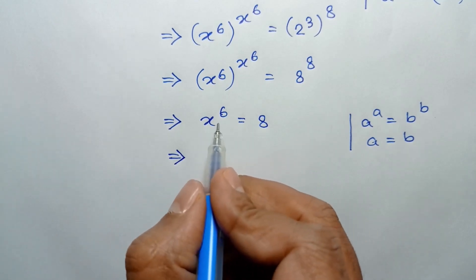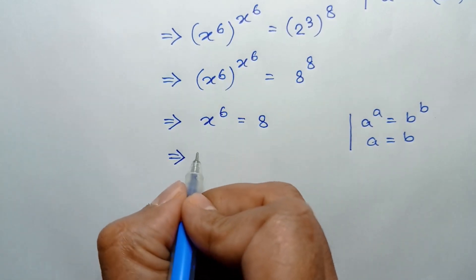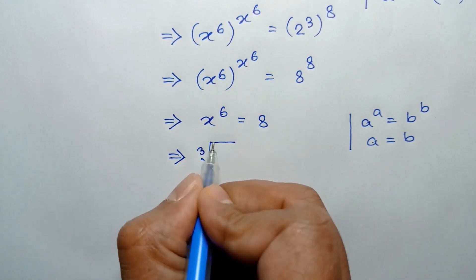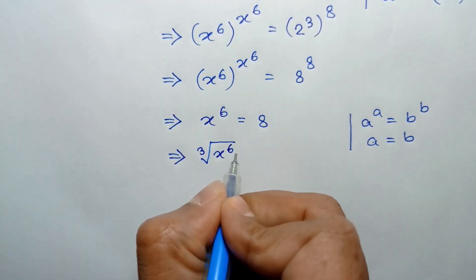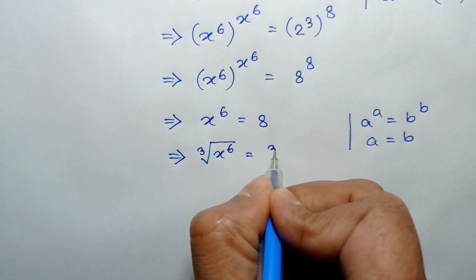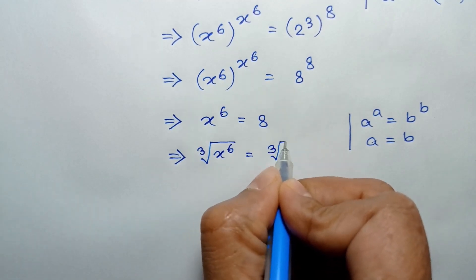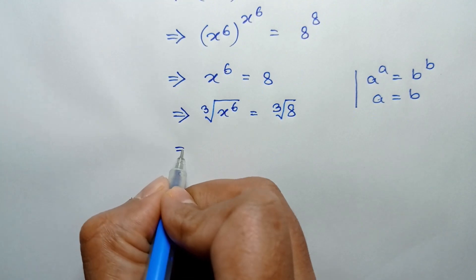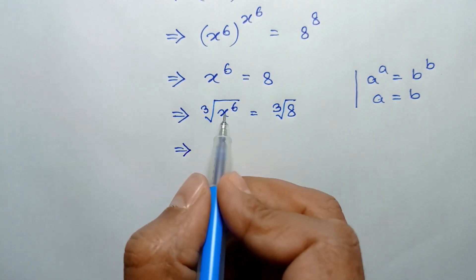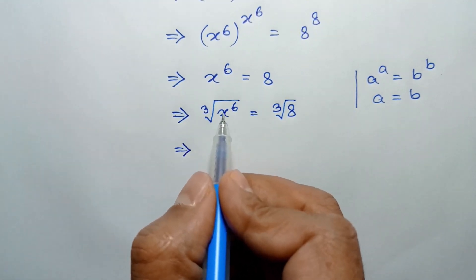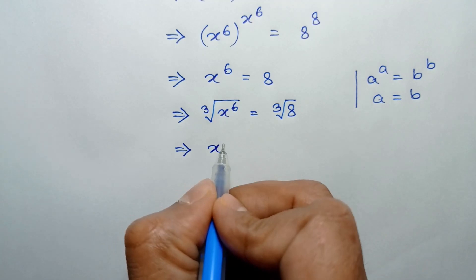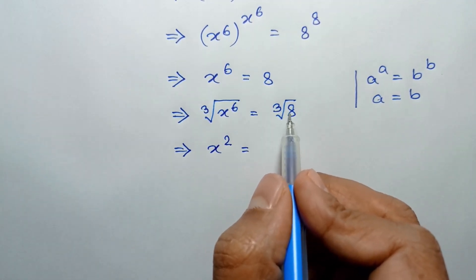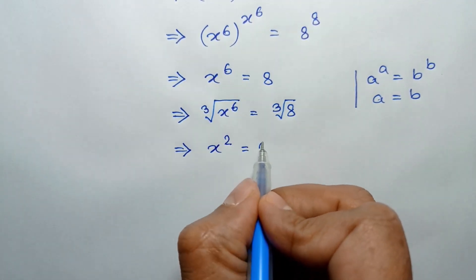Taking the cube root of both sides, cube root of x to the power 6 is x squared, and cube root of 8 is 2. So x squared is equal to 2.